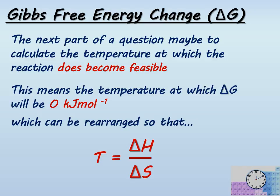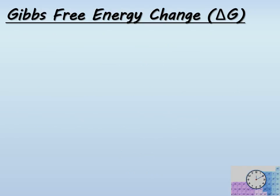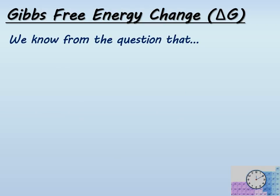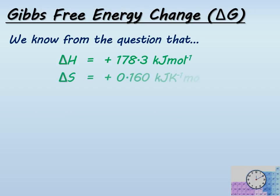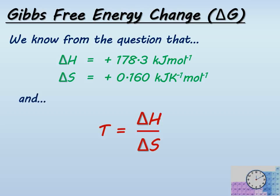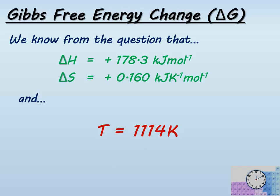Let's look at that example. We have to find the temperature at which the thermal decomposition of calcium carbonate will take place spontaneously. We were given the enthalpy change and the entropy change, and we converted the entropy change into kilojoules per Kelvin per mole. Putting that into the equation, we can work out the final answer as 1114 Kelvin. If we convert that into degrees centigrade, we subtract 273 and get 841 degrees centigrade.